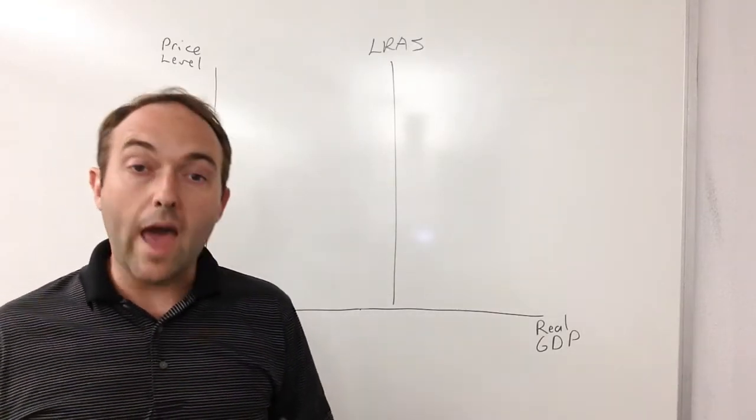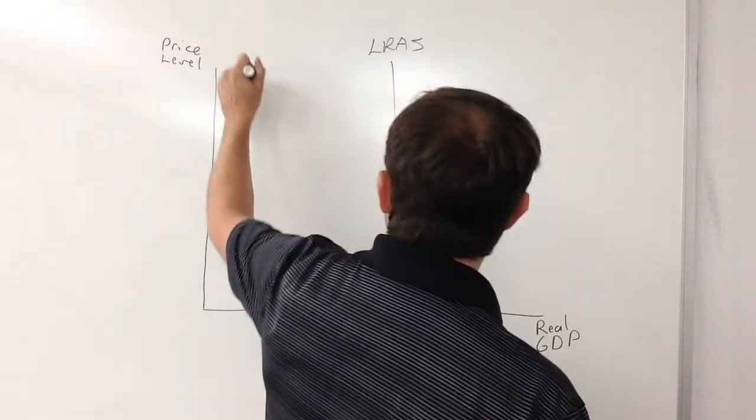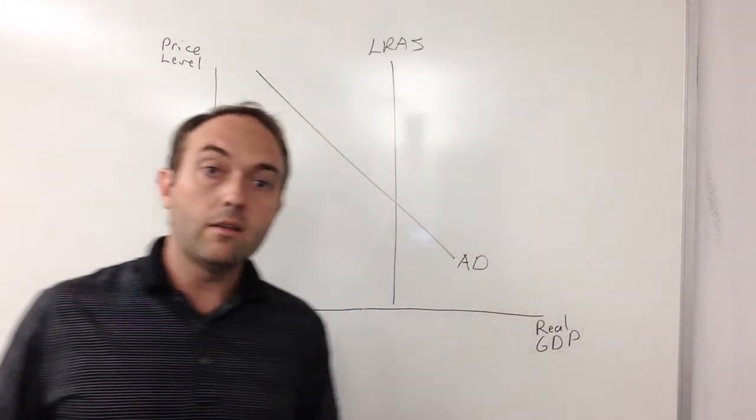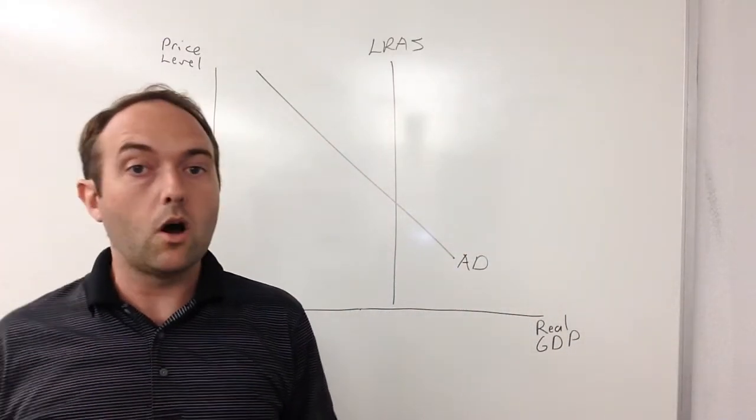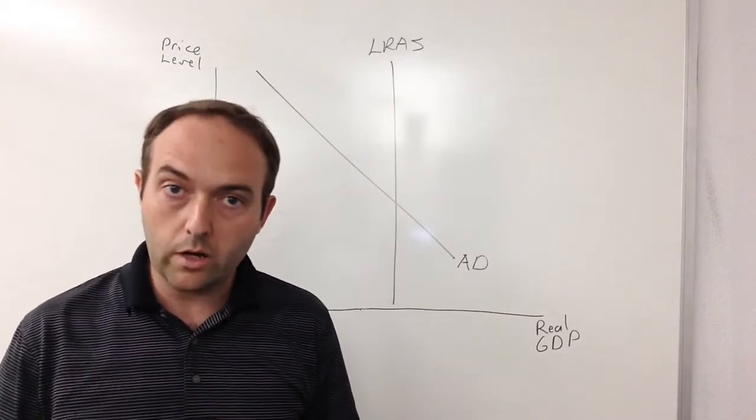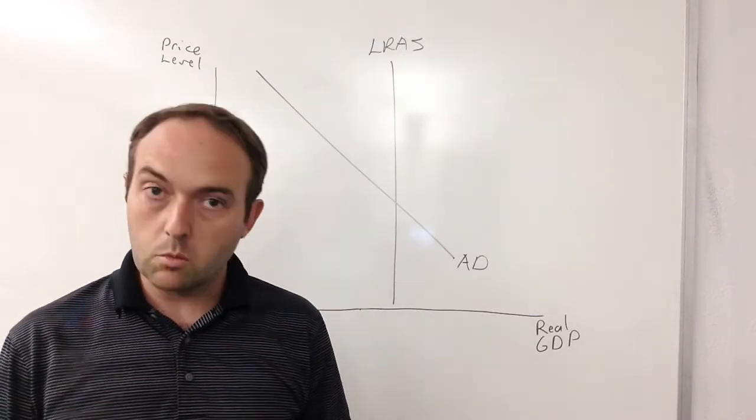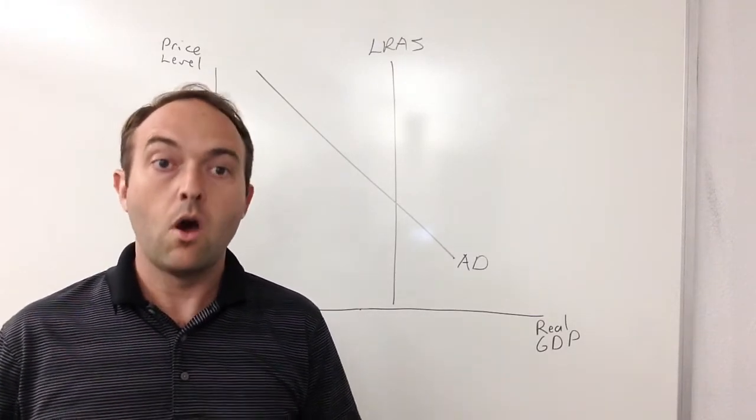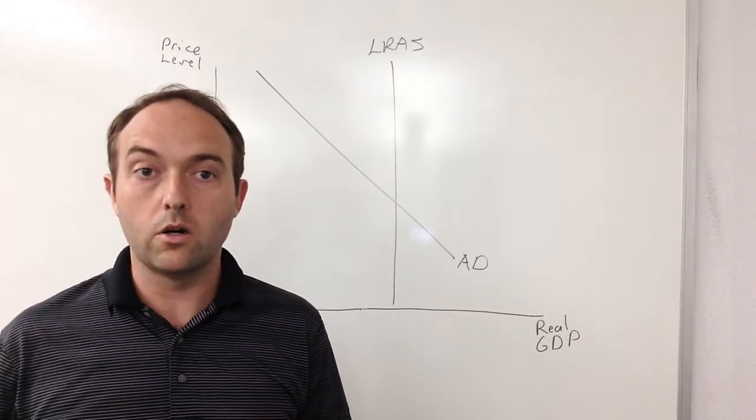Next thing we're going to look at is aggregate demand. That is a downward slope line just like all of our other demand graphs, but what aggregate demand tells us is how much consumption products we want as a country, how much investment products we want as a country, how much government products, and also our net exports all combined into one large measurement.